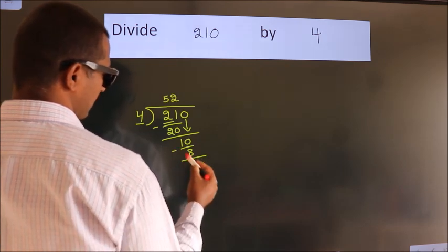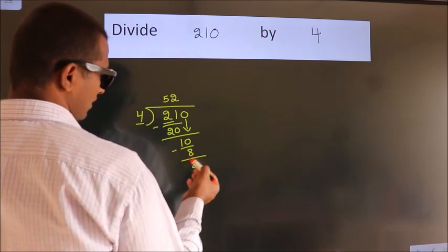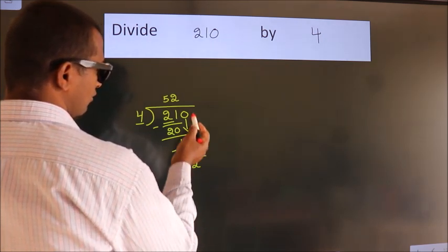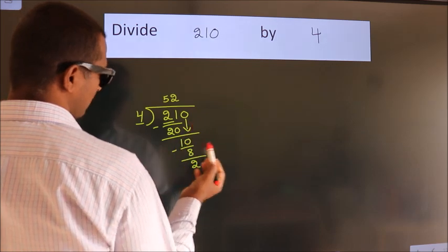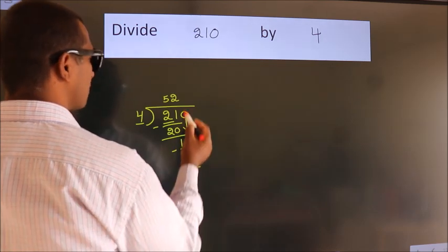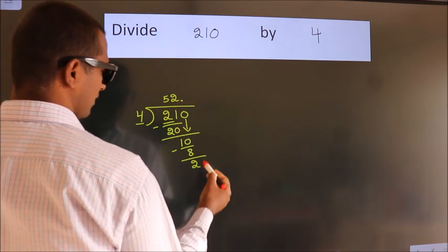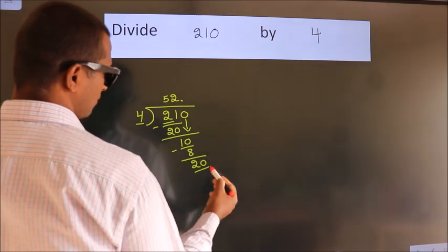Now we subtract. We get 2. After this, no more numbers to bring down. So what we do is, we put a dot and take 0. So, 20.